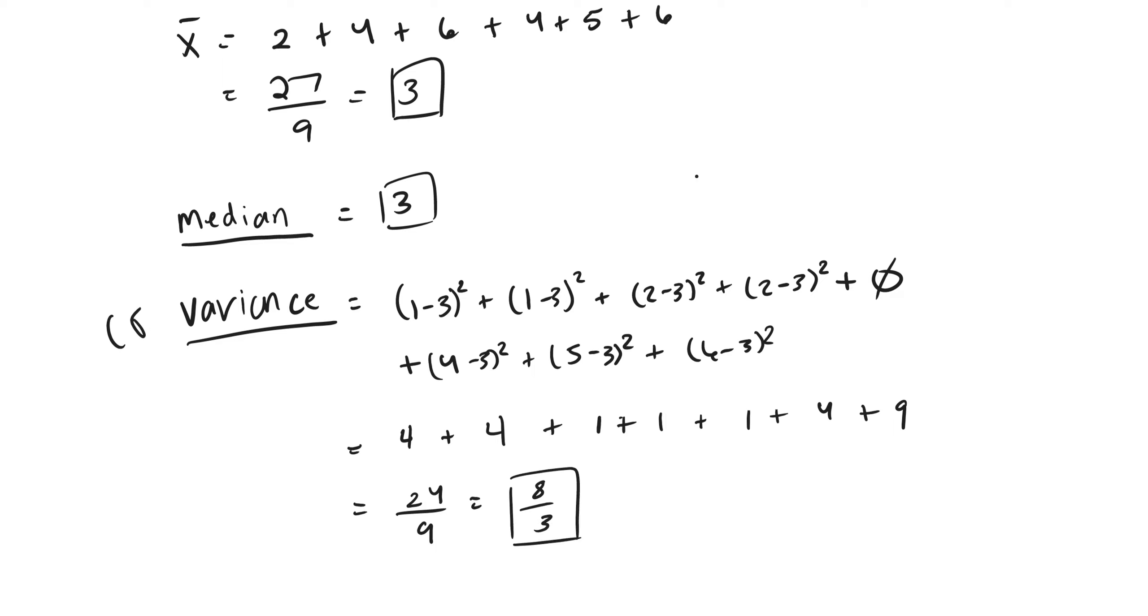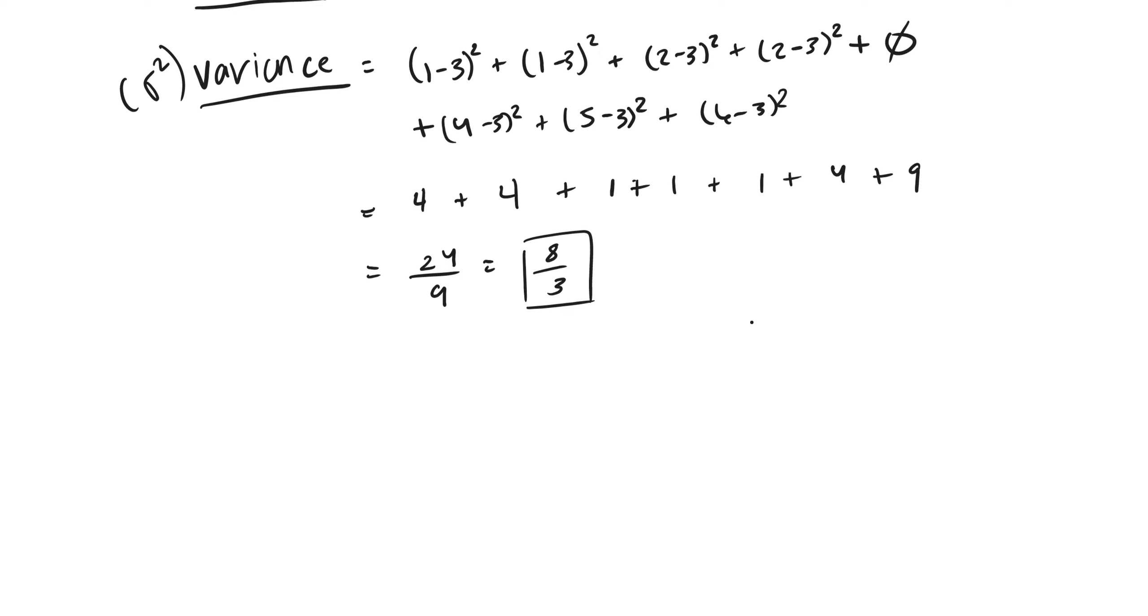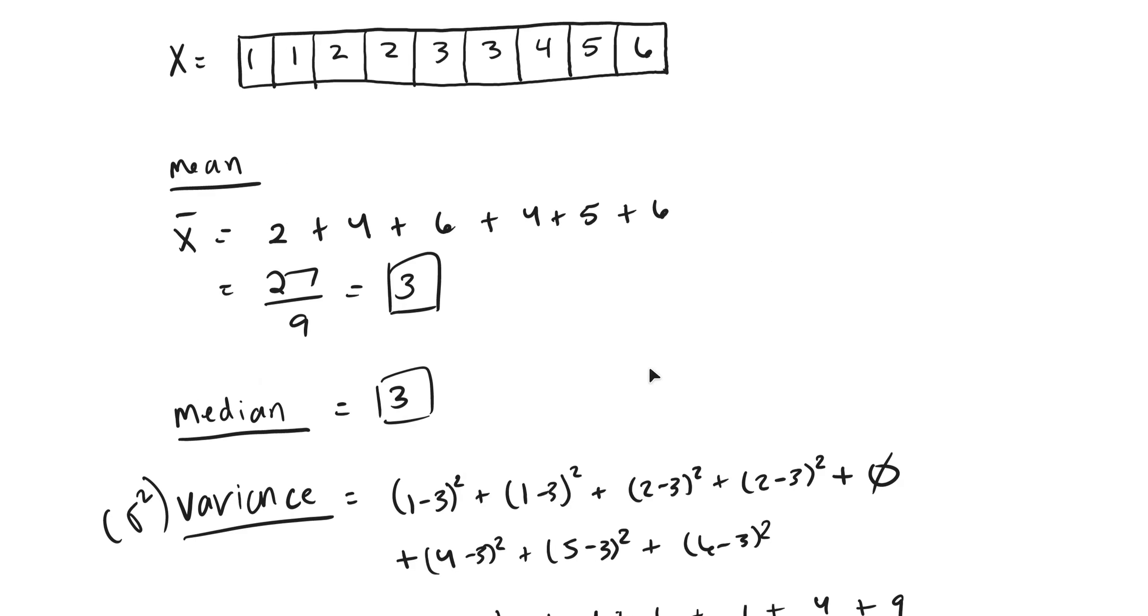And so our standard deviation, just to drive this home, sigma, commonly write standard dev. If you use Excel, you'll see it written that way as well. It's just the square root of eight over three. And so that's how you calculate the variance. That's how you calculate the median and the mean.